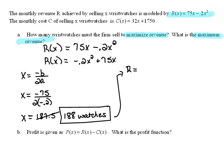So we're just going to plug in that X value and solve. So that would be negative 0.2 times 188 squared plus 75 times 188. And then when we plug that into our calculator, do the math on that, we should get 7031.2.